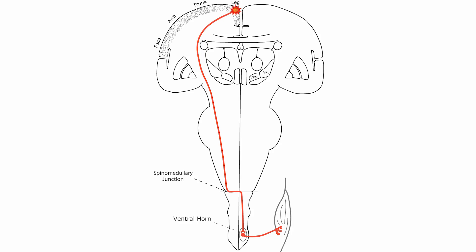Let's summarize this important motor pathway. The corticospinal tract, sometimes called the pyramidal tract, goes not only to the spinal cord but to the brain stem motor nuclei associated with certain cranial nerves. The upper motor neuron originates in the cortex and crosses to the opposite side of the spinal cord.